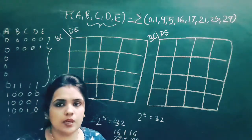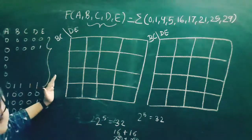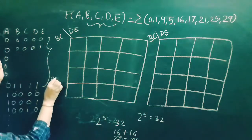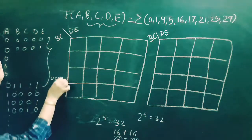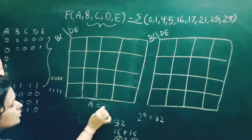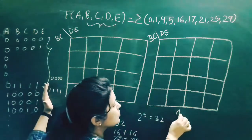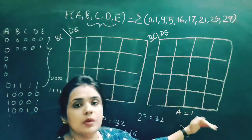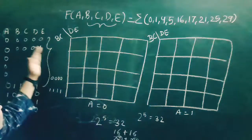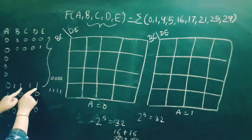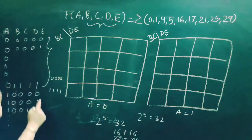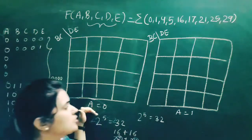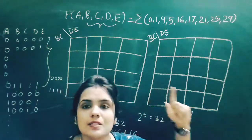We observe that for the first 16 values, a equals 0, and for the next 16 values, a equals 1. So in the first K-map we take a=0, and in the second K-map we take a=1.